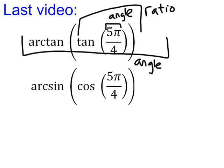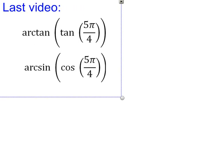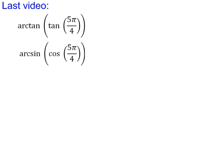The arctangent of the tangent of 5π over 4 turned out to be π over 4, as we demonstrated in the last video, and our final answer was indeed an angle. We're going to reverse that in this video such that our final answer turns out to be a ratio.